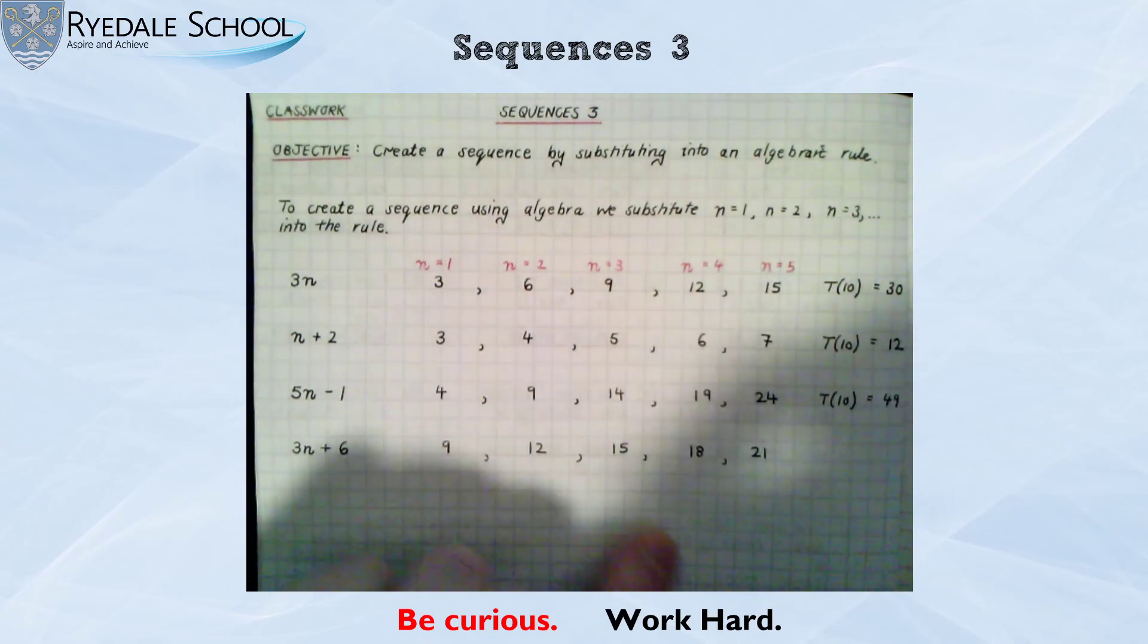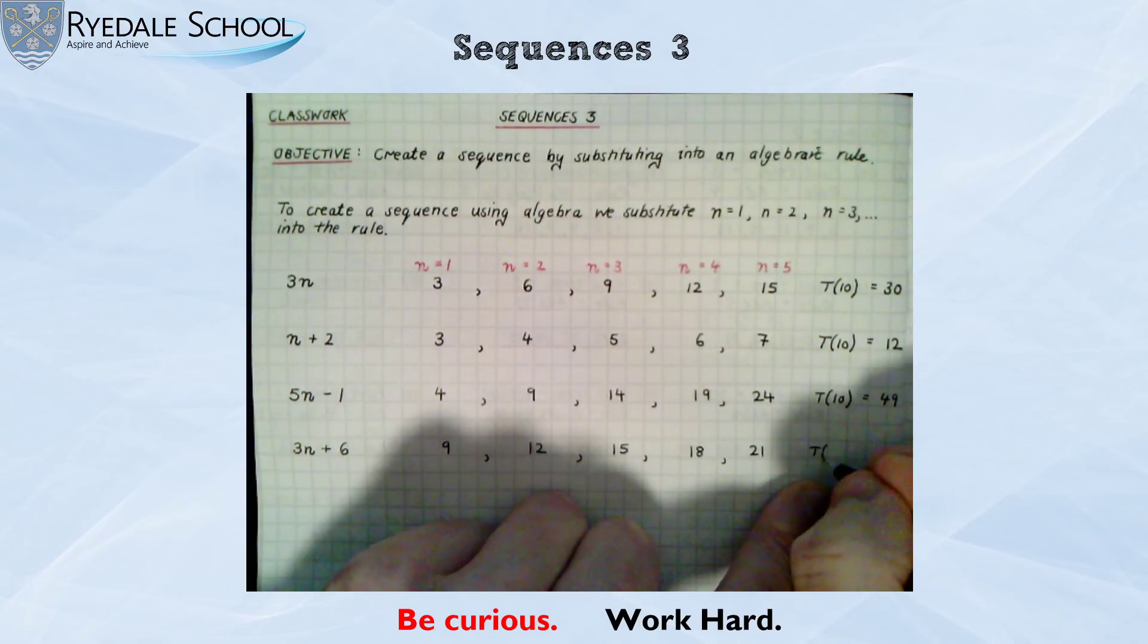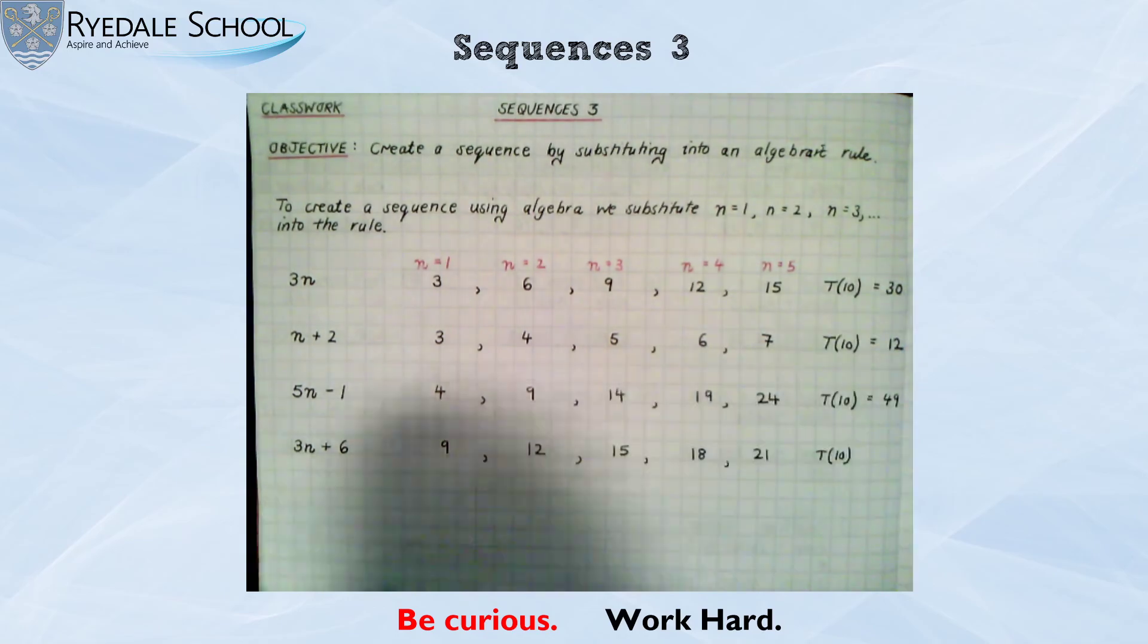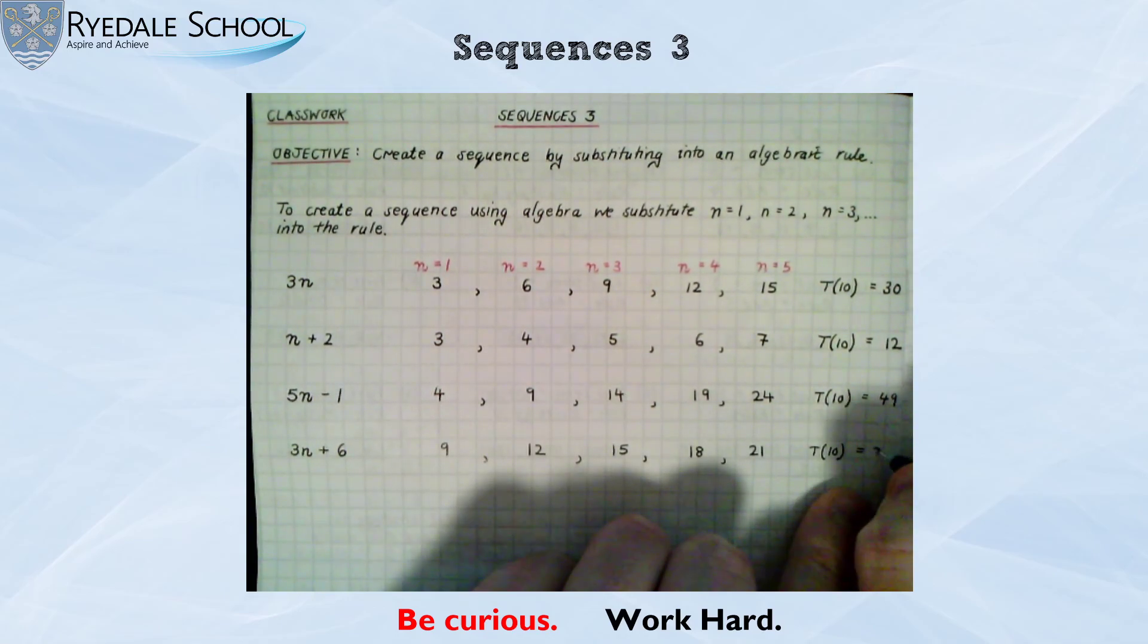If anyone was clever and did the 10th term, it would be 3 times 10, which is 30, add 6 is 36.